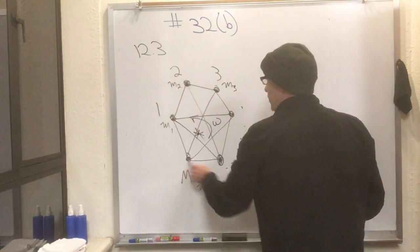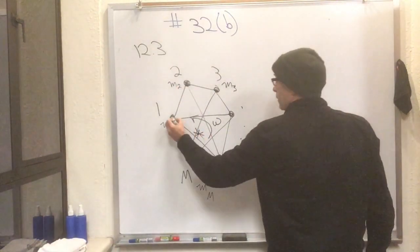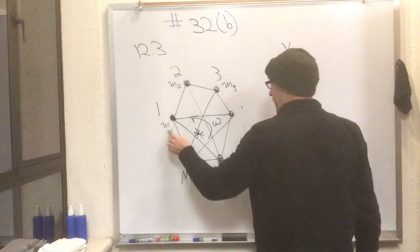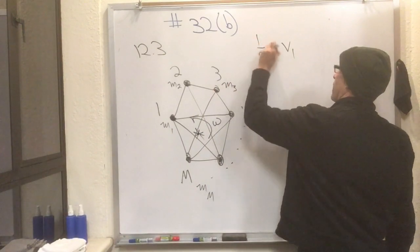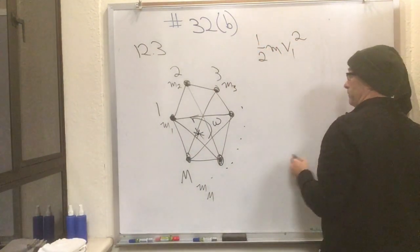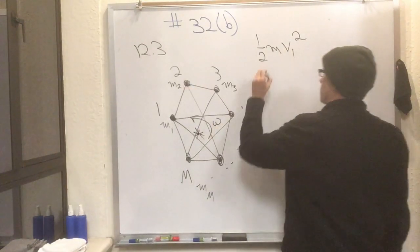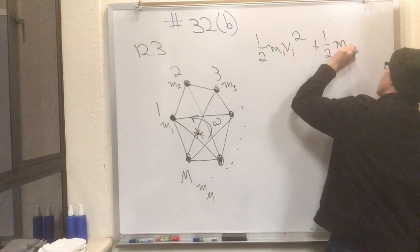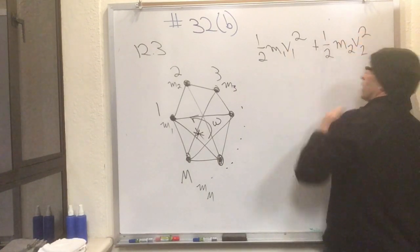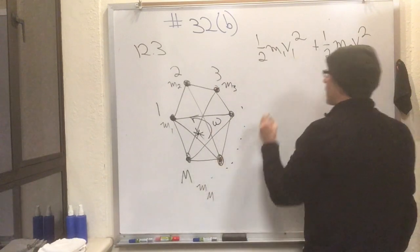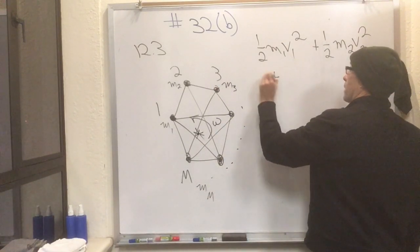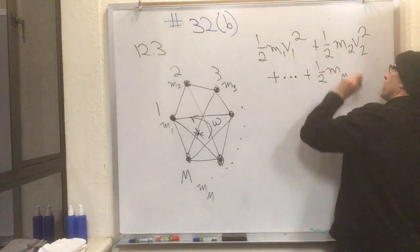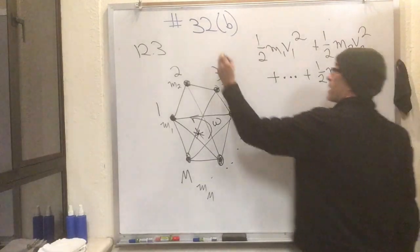Now we can ask the question, how much kinetic energy is there here? Well, how fast is this guy moving? Let's call that v1. Its kinetic energy is one-half m1 v1 squared. Then there's this one moving, its kinetic energy is plus one-half m2 v2 squared, and then there's this one dot dot dot, all the way up to the last one, which is plus one-half m sub capital M v sub capital M squared.